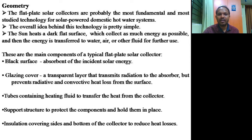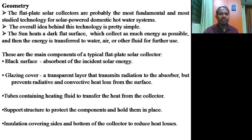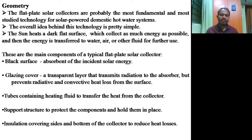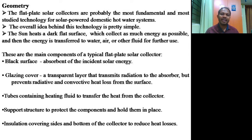The main components of a flat plate collector are: a black surface painted on the absorber to absorb incident solar radiation — black because it absorbs all radiations and increases heat. The glazing cover is a transparent layer that transmits radiation onto the absorber but prevents radiative and convective heat loss from the surface.